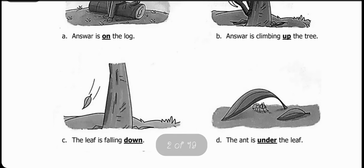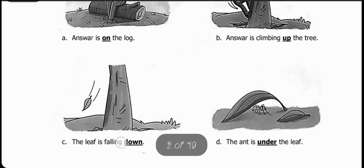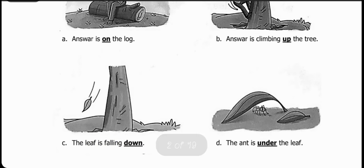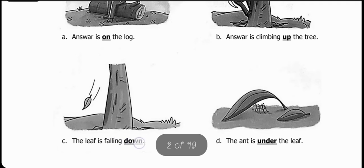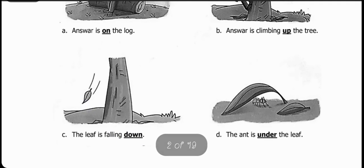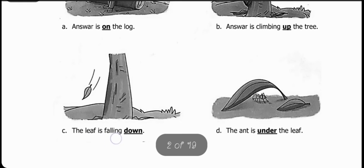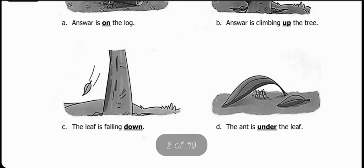Next statement is: The leaf is falling blank. This is a leaf, it is falling, and where will it fall? It will come down. Down means niche. The leaf is falling down. Patta niche gir raha hai.